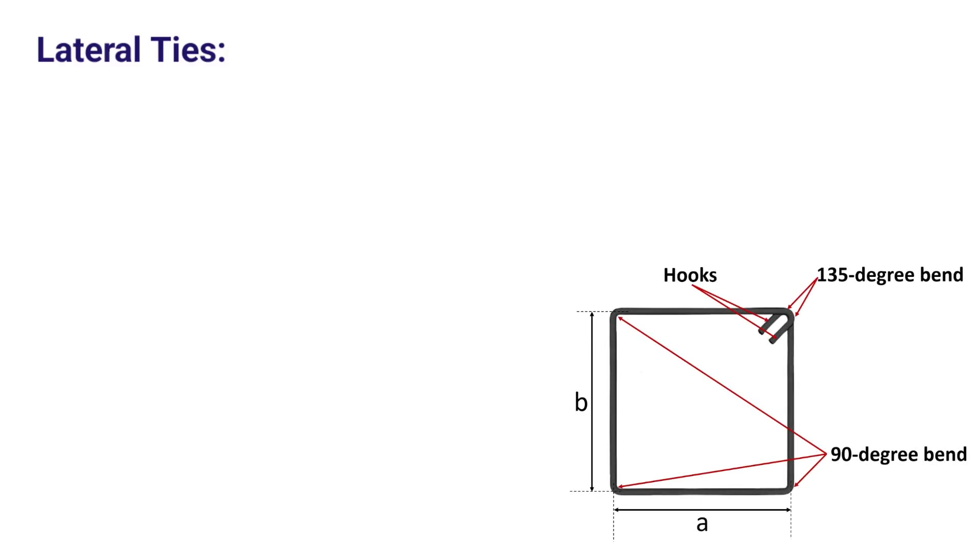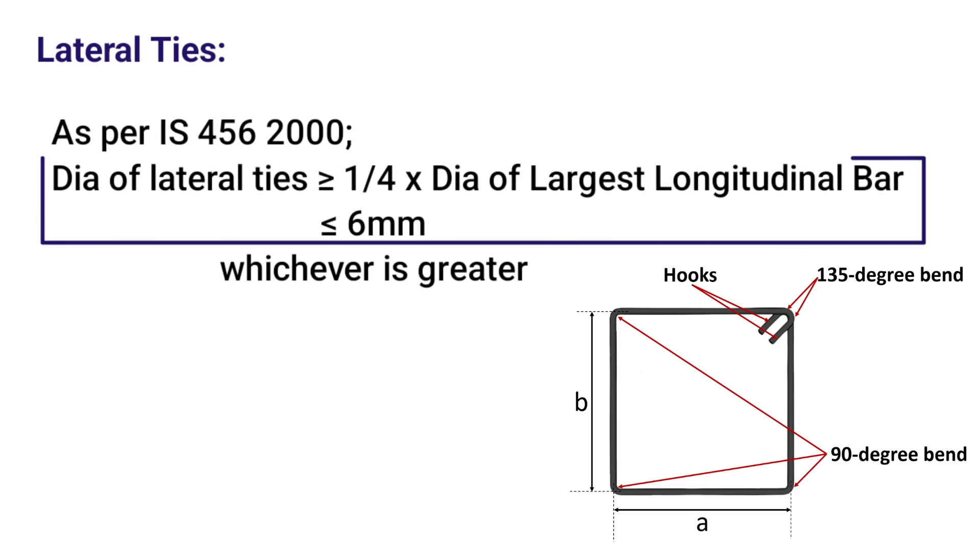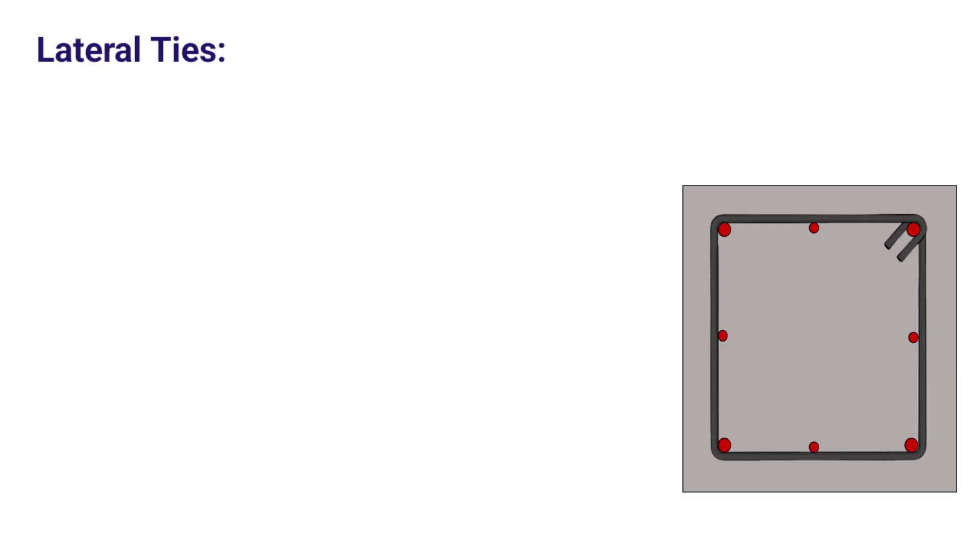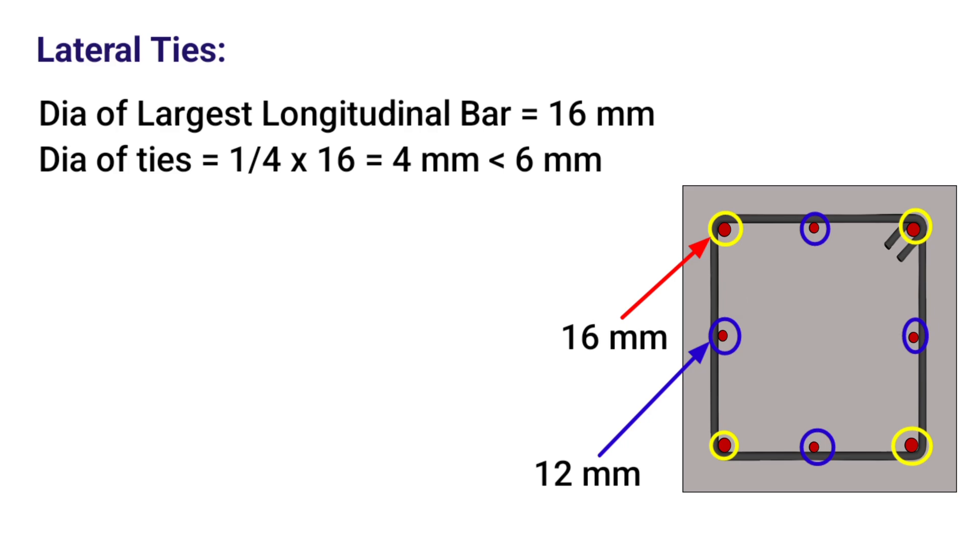Now talking about the lateral ties, IS 456-2000 suggests that the diameter of the lateral ties shall not be less than 1/4 of the diameter of the largest longitudinal bar, and in no case less than 6 mm, whichever is greater. For illustration, if we have a column provided with 8 number of longitudinal bars, out of which, 4 number of 16 mm bars are provided at the corners, and 4 number of 12 mm bars at the intermediate positions. The diameter of the largest longitudinal bar would be 16 mm. Diameter of ties would be either equal to 1/4 of 16 or 6 mm, whichever is greater. 1/4 of 16 is 4 mm which is less than 6 mm. Therefore, we can provide 6 mm ties in such column. However, it is practically recommended to provide a minimum of 8 mm ties.